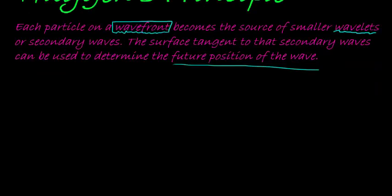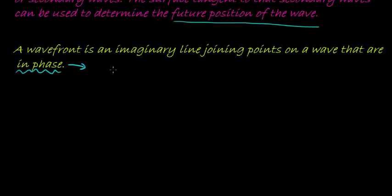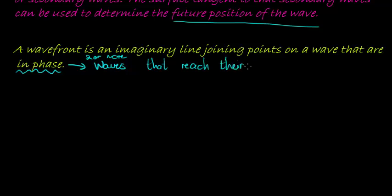So let's look at what a wave front is. A wave front is an imaginary line joining points on a wave that are in phase. The only thing you might not know here is the term 'in phase.' In phase refers to two or more waves that reach their peaks and troughs at the same time.